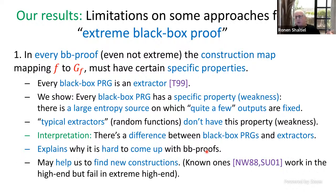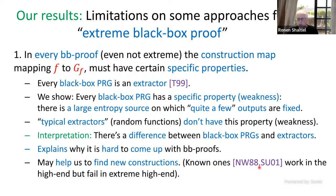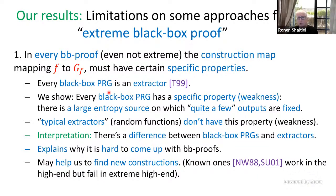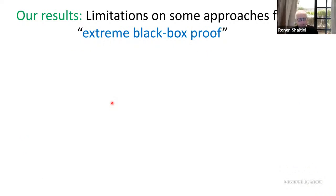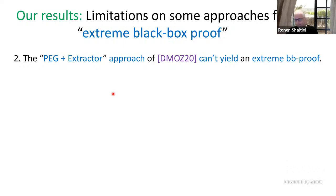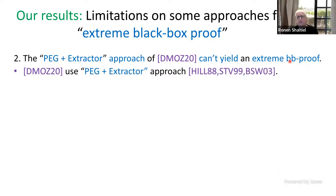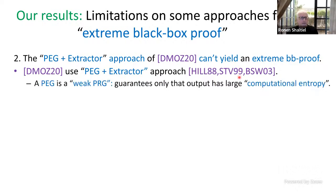Moreover, now that we know how such black-box proofs should look, maybe it will be easier to find new constructions — though the ones we have fail in the extreme high-end. The next result is that the approach of DMOZ cannot yield an extreme black-box proof. DMOZ uses an approach I'll call pseudo-entropy generator plus extractor, a PEG plus extractor approach, which was already suggested in the past.